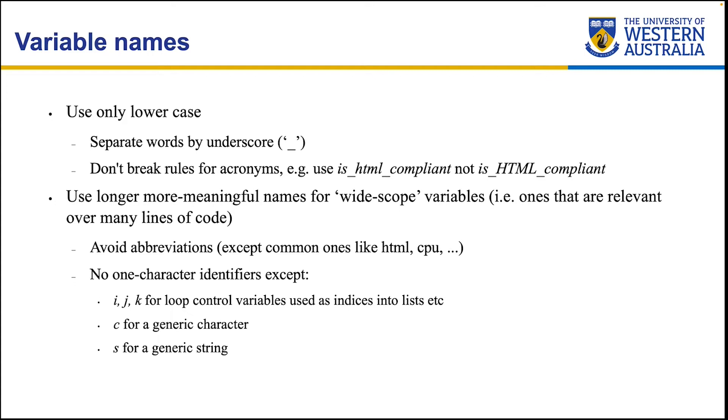Use longer, more meaningful names for wide scope variables, ones that are relevant over many lines of code. Also, you should try to avoid abbreviations, except very common ones like HTML, CPU, and anything else that you can think of. Usually, you want to have the variable names at least three characters long and longer to make it into proper words to make it more meaningful. There are some exceptions though. For example, i, j, and k are very standard across all programming languages to be known for loop control variables, so the ones that are going to be used as indices into lists. And c for generic character and s for a generic string. But usually, other than these, you wouldn't want to use a single or double letter characters as a word to describe a variable.